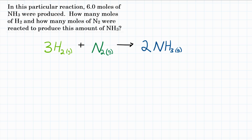So in this particular reaction, 6.0 moles of NH3 were produced. How many moles of H2 and how many moles of N2 were reacted to produce this amount of NH3? The problem is saying that 6.0 moles of NH3 was produced — how many moles of N2 and how many moles of H2, both of our reactants, must have reacted to make that 6.0 moles of NH3?